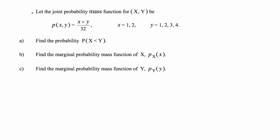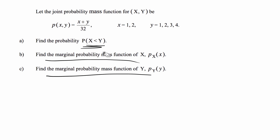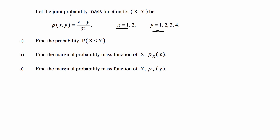In this video we're going to do a statistics and probability problem. This is a joint probability question. We're given a joint PMF and asked to find the probability that x is less than y, and also two marginal probabilities. The values of x and y are given. This is a discrete PMF joint probability distribution, which is an easier case than a continuous PDF.